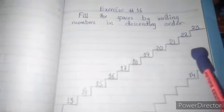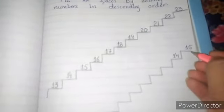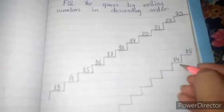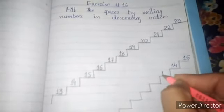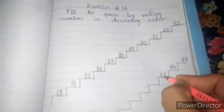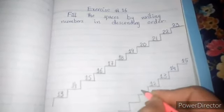Students, see this is our descending order because we are coming down. Now the second stairs is our 15. There is 14. Now again we will come down. There will come 13, 12, 11.